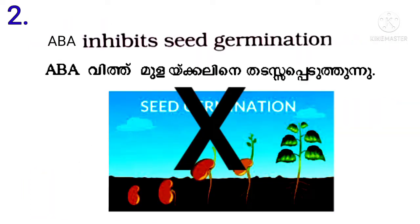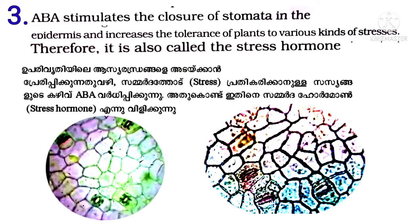ABA inhibits seed germination. ABA stimulates the closure of stomata in the epidermis and increases the tolerance of plants to various kinds of stresses. Therefore, it is also called the stress hormone.